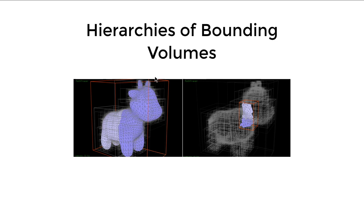Similarly, if the ray does intersect with the red box but does not intersect with the gray box that encloses the head or front legs, we don't need to check that part. If the ray does intersect with the box that includes the tail part of the cow, then we need to continue to delve into that bounding volume and do our calculation recursively.